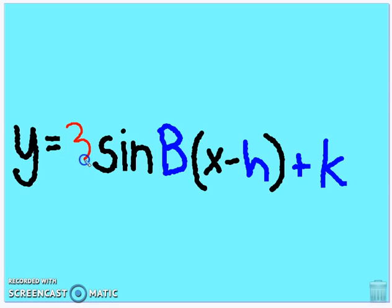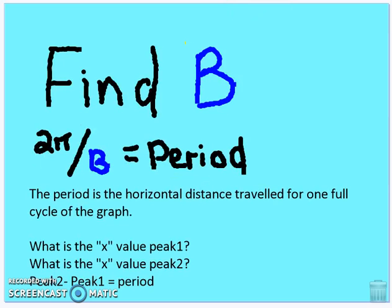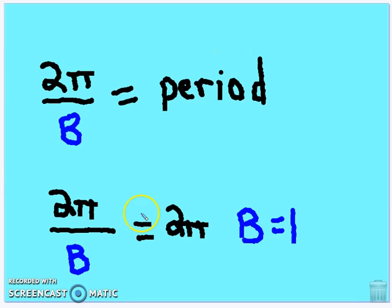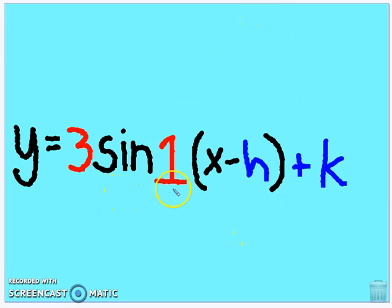Next, we find the B value related to the period. The period is 2 pi over B, so we need the horizontal length of one cycle — measured peak to peak. Peak 1 is at 3 pi fourths, peak 2 is at 11 pi fourths, so the period is (11 pi over 4) minus (3 pi over 4) = 8 pi over 4 = 2 pi. Therefore 2 pi over B = 2 pi, so B equals 1. You don't need to write 1 explicitly — if no value is listed, B is assumed to be 1.